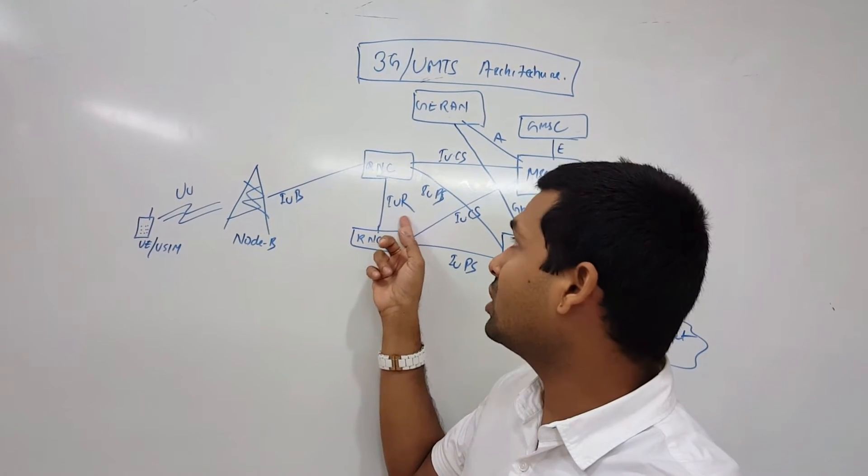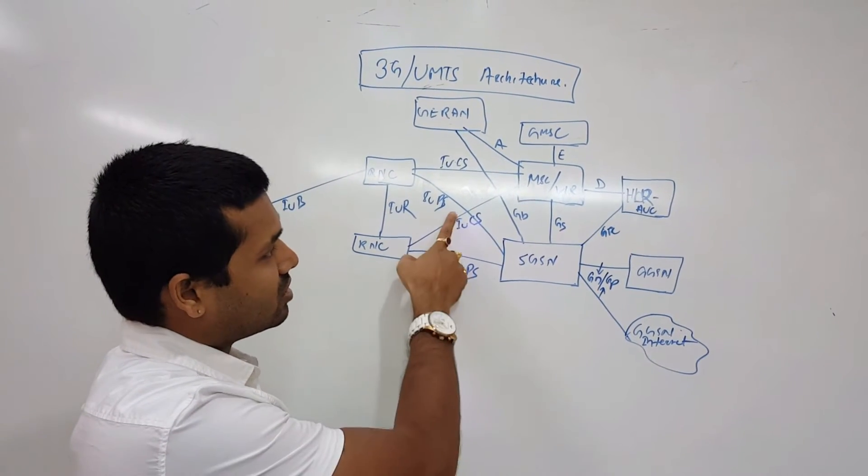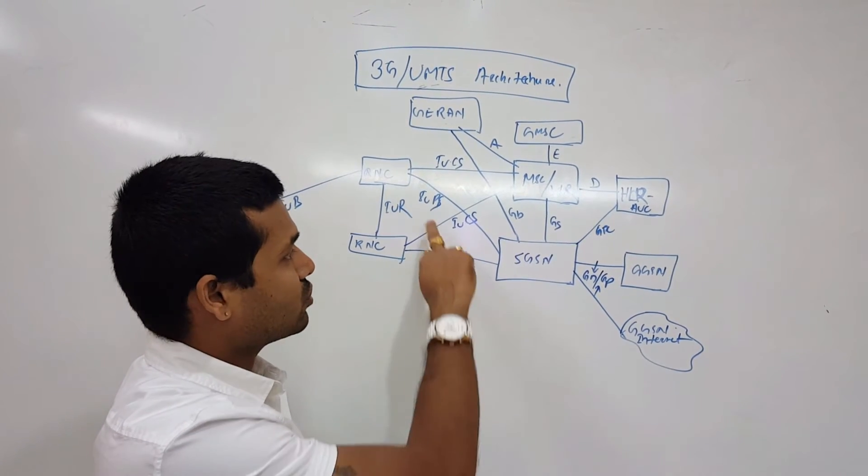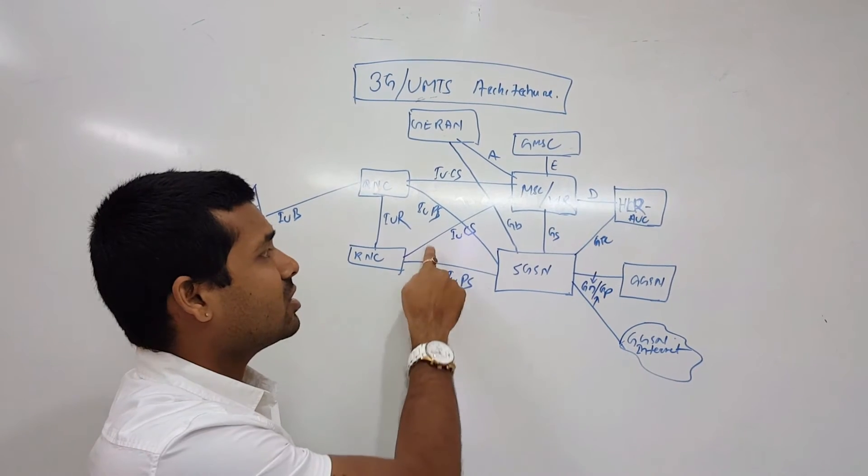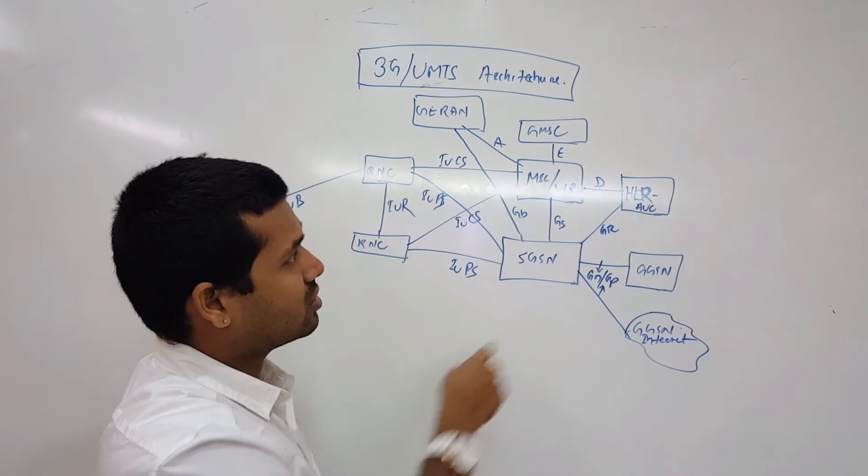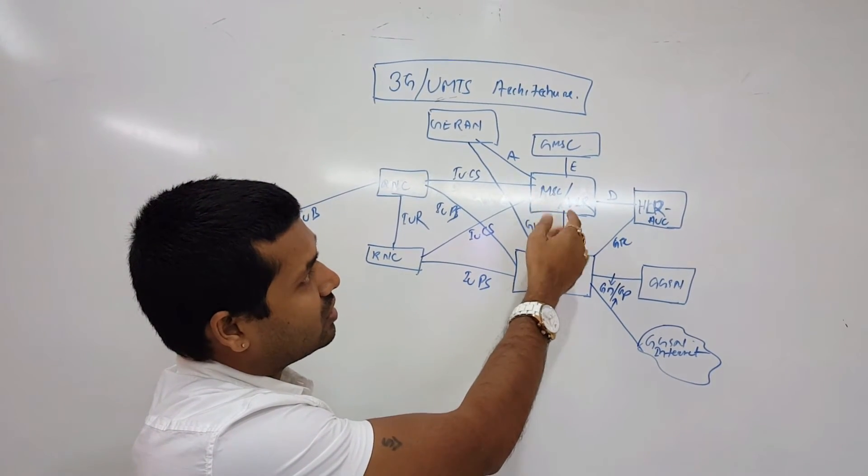From RNC we are having IUCS towards MSC or VLR, and IUPS towards HGS. So two different interfaces here from RNC - IUCS and IUPS. Those are differently handled with different nodes.